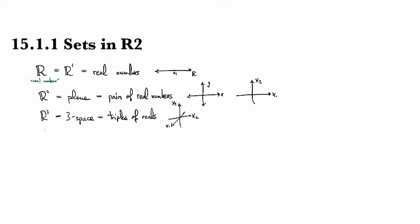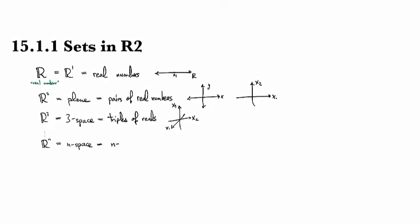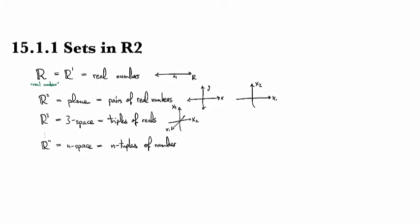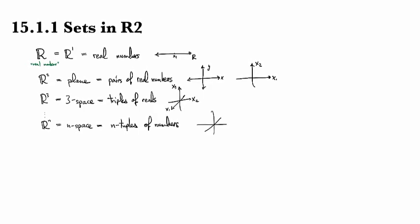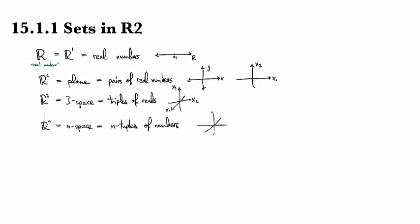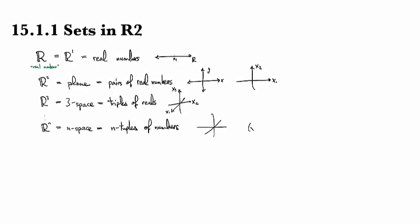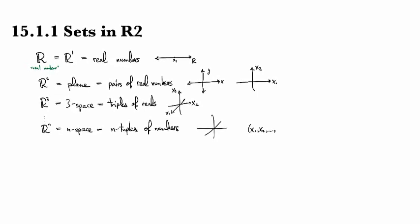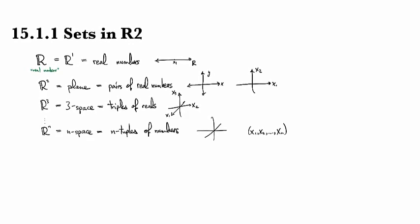And then we can have, in general, any Rⁿ. This is all n-tuples of numbers. I'm not going to draw this one because I don't know how to — I might give some goofy sketch and pretend I know what I mean. In general, we won't bother drawing these. The best way to conceptualize it is just to think that every point in here is a list of n numbers — an n-tuple.